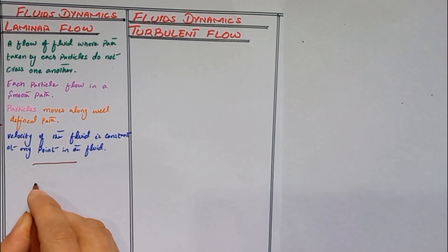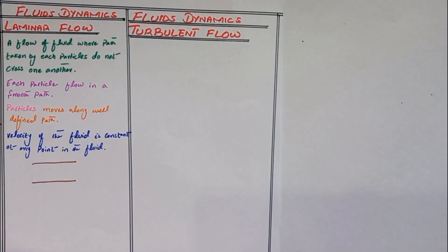If we draw the diagram of the laminar flow, in this diagram each particle moves in a smooth path and does not cross one another.